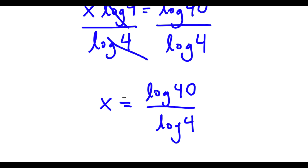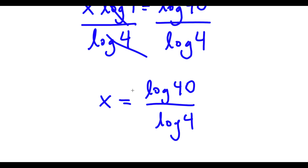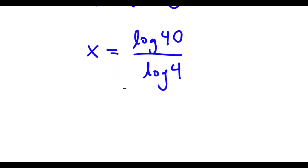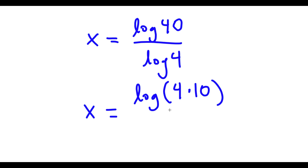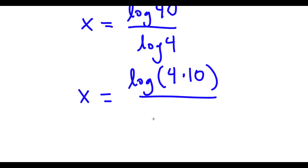Now, log 40 is the same thing as log of 4 times 10, because 40 equals 4 times 10. So I have log of 4 times 10 over log 4.